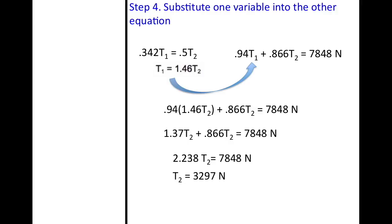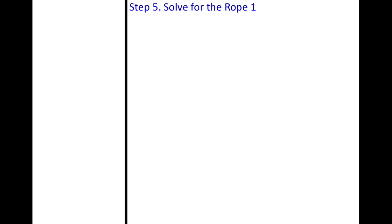Now we have our variable. We have our number for t2. So now all you have to do is solve for rope 1 by plugging in this number back into this small little equation up there. So we have t equals 1.46t2 and we have our t2 as being 3,297 newtons. Plug that in, multiply, and solve.